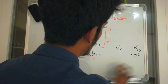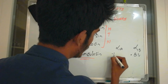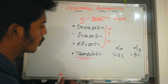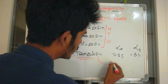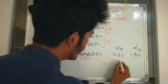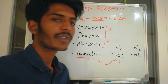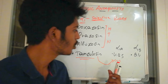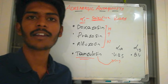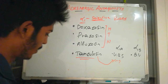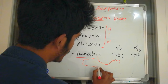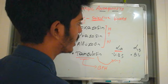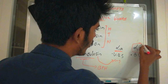Alpha 1b receptors are located in blood vessels, while alpha 1a receptors are located in the urinary bladder sphincters. Tamsulosin selectively blocks alpha 1a — when alpha 1a is blocked, there is no contraction of the sphincter and the person can urinate more easily. Therefore tamsulosin is used in benign prostatic hyperplasia (BPH), because it only affects alpha 1a with no effect on alpha 1b.